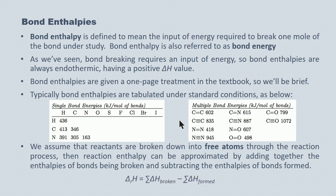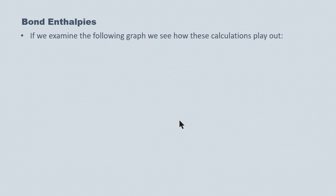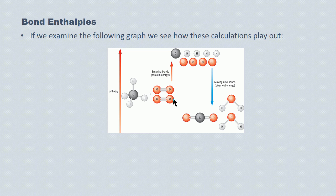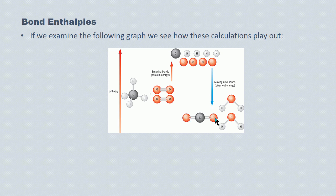Here's an energy diagram for the combustion of methane with oxygen. The graph goes up as energy is put in to break all bonds in the reactants: four carbon-to-hydrogen single bonds and two oxygen-to-oxygen double bonds. The reactants are broken down to free atoms, so enthalpy increases. Then products are formed — one carbon dioxide molecule with two carbon-to-oxygen double bonds, and two water molecules with four hydrogen-to-oxygen bonds — and enthalpy decreases because bond formation releases energy to the surroundings.